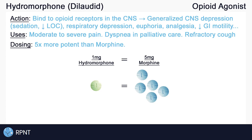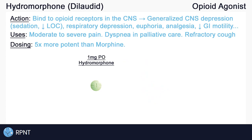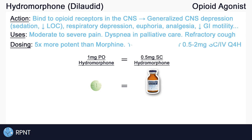For example, if you're switching from oral administration to subcutaneous administration, an order of one milligram of oral hydromorphone would be switched to about 0.5 milligrams of subcutaneous hydromorphone. Some common hydromorphone doses are 1 to 4 milligrams orally every four hours, or about 0.5 milligrams to 2 milligrams subcutaneously every four hours. Notice the difference in dosing between oral and injectable administration.